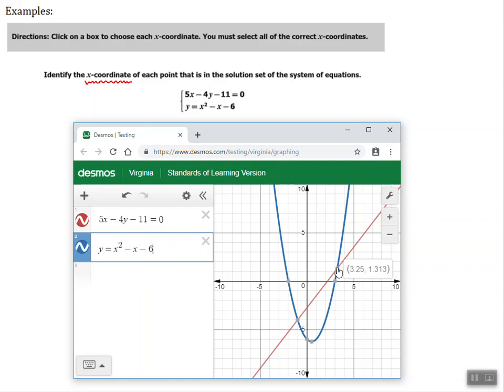And the solution to our system is where these two graphs intersect each other. So I can see one here. And I'm going to click it. And it will stay there. And I see another solution right here where these graphs intersect right here. So I'm looking at two solutions. And remember, I'm just looking for the X coordinates. So one of them is 3.25 and the other X coordinate is negative 1.